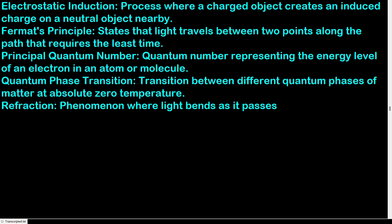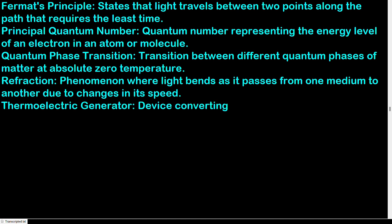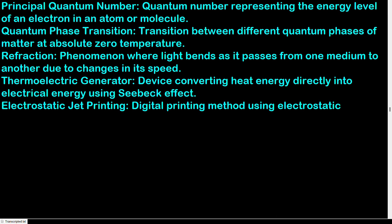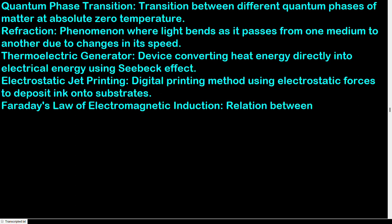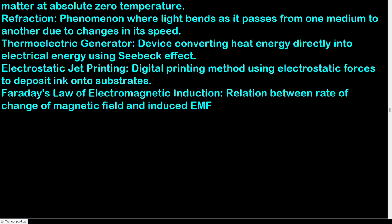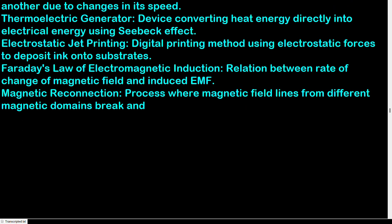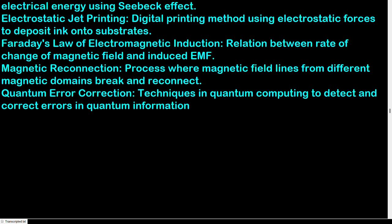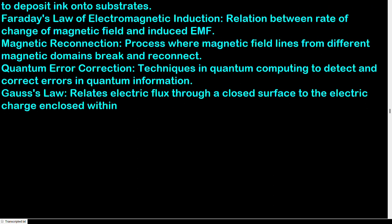Refraction: phenomenon where light bends as it passes from one medium to another due to changes in its speed. Thermoelectric generator: device converting heat energy directly into electrical energy using the Seebeck effect. Electrostatic jet printing: digital printing method using electrostatic forces to deposit ink onto substrates. Faraday's law of electromagnetic induction: relation between rate of change of magnetic field and induced EMF. Magnetic reconnection: process where magnetic field lines from different magnetic domains break and reconnect. Quantum error correction: techniques in quantum computing to detect and correct errors in quantum information. Gauss's law: relates electric flux through a closed surface to the electric charge enclosed within the surface.